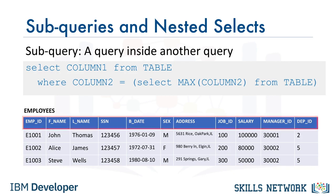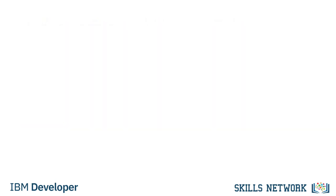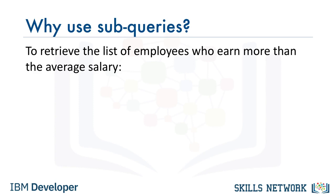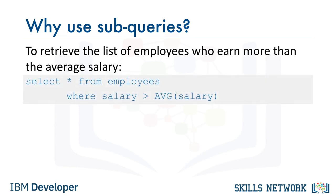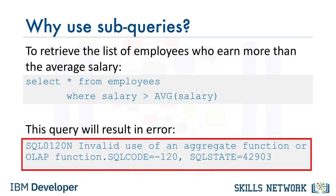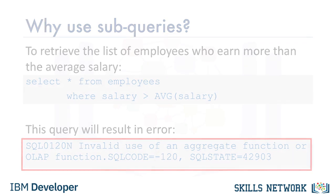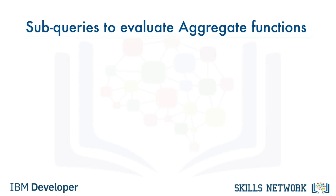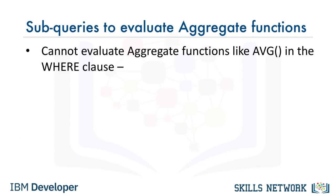We will now go over some examples involving this table. Let's consider a scenario which may necessitate the use of subqueries. Let's say we want to retrieve the list of employees who earn more than the average salary. We could try: SELECT * FROM employees WHERE salary is greater than AVG(salary). However, running this query will result in an error like the one shown, indicating an invalid use of the aggregate function. One of the limitations of built-in aggregate functions like the average function is that they cannot always be evaluated in the WHERE clause.